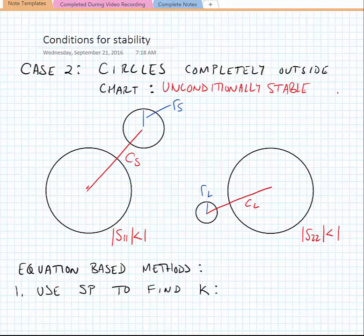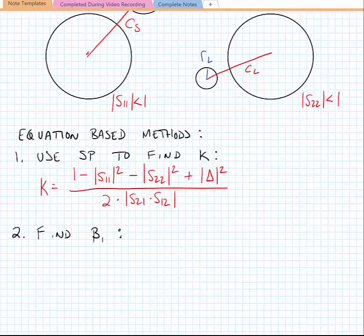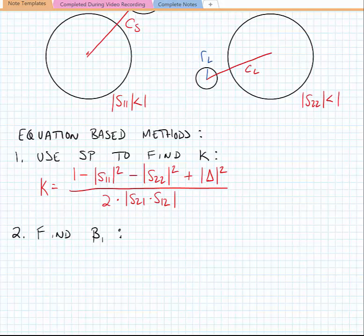Much like we found a K factor for our prior example using admittance parameters, we can also find a K parameter using S-parameters. Here we find that K using S-parameters is equal to 1 minus the magnitude of S11 squared minus the magnitude of S22 squared plus the determinant squared, divided by 2 times the magnitude of S21 times S12. And just like in our prior case, K needs to be greater than 1 in order to ensure stability.